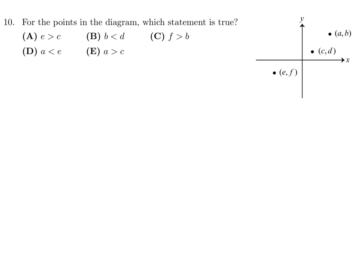For the points in the diagram, which statement is true? Keeping in mind: positive and negative directions on both axes. Is E greater than C? E is a negative number, maybe negative 5, and C is positive, maybe 1 — so no. Is B less than D? B is on the y-axis, maybe 4, and D is on the y-axis at maybe 1 — so no. Is F greater than B? F is about negative 2, B is about 4 — no.